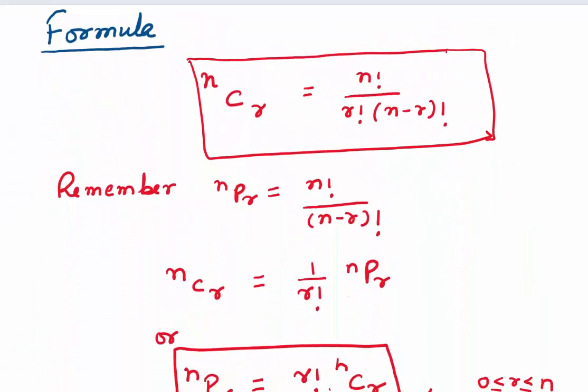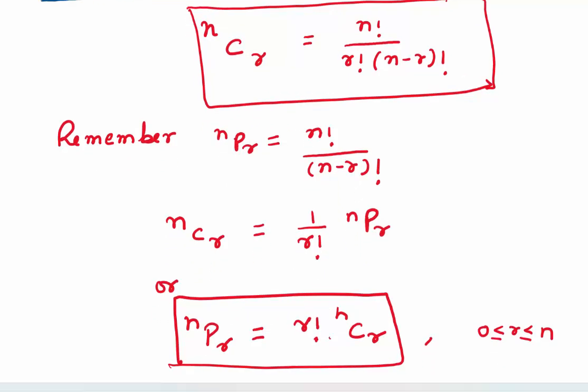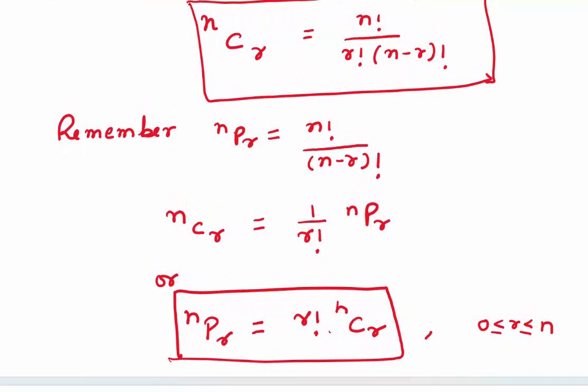Let's look at the formula for combinations. It's denoted by NCR, meaning we are choosing R objects out of N. It's given by N factorial divided by R factorial times (N minus R) factorial. Comparing to permutations, NPR equals N factorial divided by (N minus R) factorial, so NCR equals (1 divided by R factorial) times NPR.